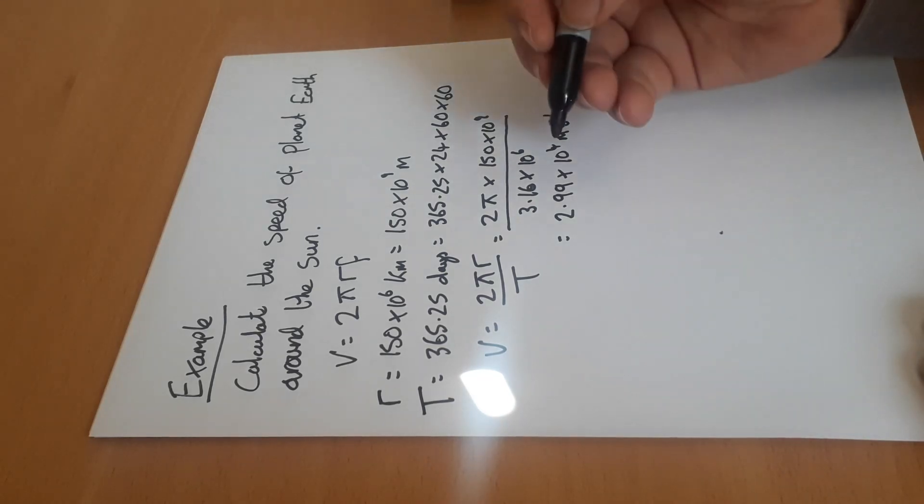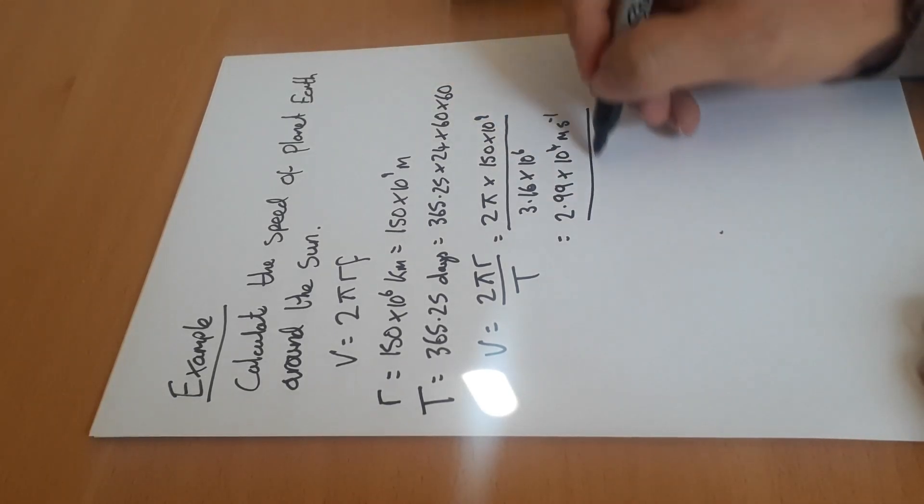So once we know our time period or our frequency, we know the radius of the orbit, we can work out how fast an object must be going.